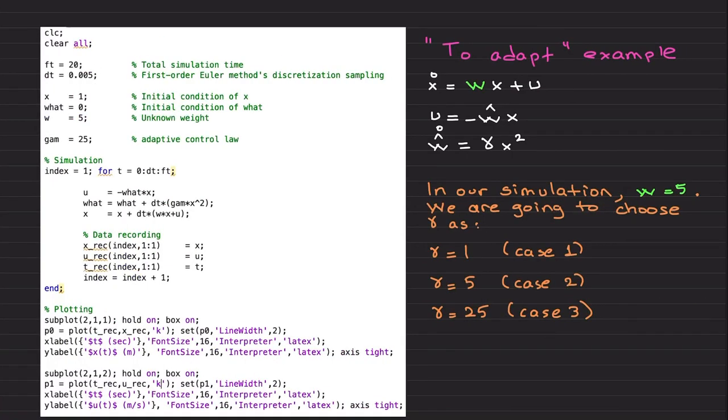Now I would like to move to the adaptive example. We have the same system, but instead of using a fixed gain control architecture, I'm going to use this adaptive control architecture subject to this weight update law. Basically, w hat is updated according to this update law, and here is the learning rate, positive gamma. In our simulation, I'm going to set w to be 5, and we're going to choose the learning rate to be first 1, then 5, then 25.